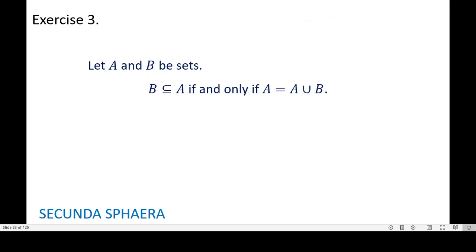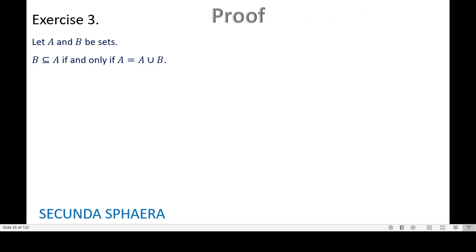For exercise number 3, let A and B be sets. We want to prove that B is contained in A if and only if A is equal to the union of A and B. What we want to prove is an if-and-only-if statement — an equivalence. An important thing to remember about proving equivalences is that, in general, they are a two-part problem.